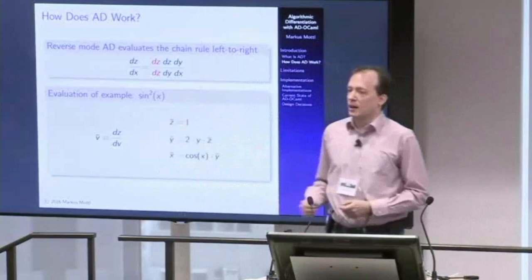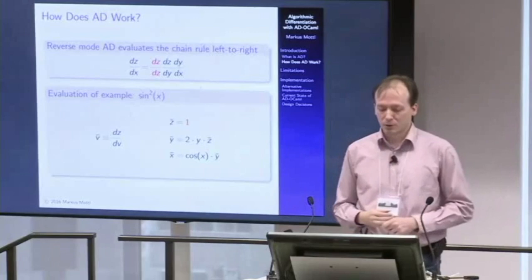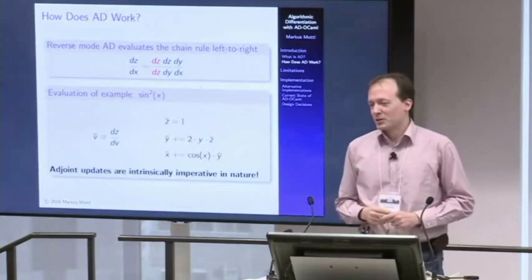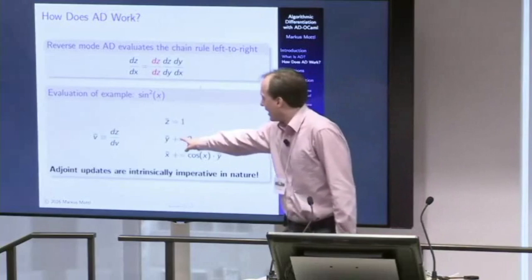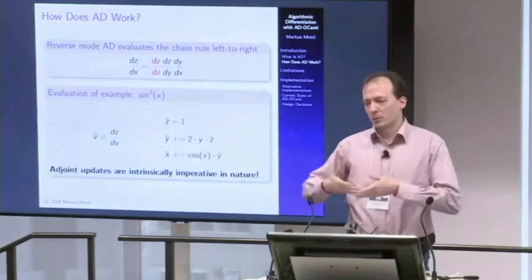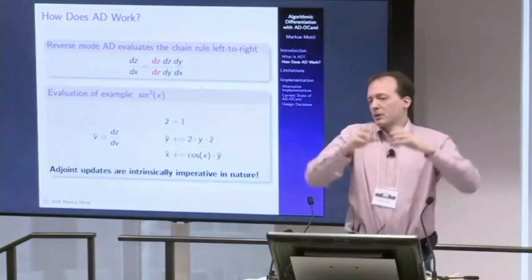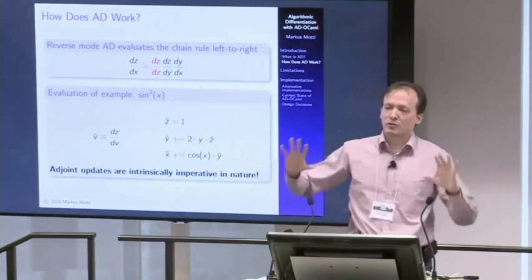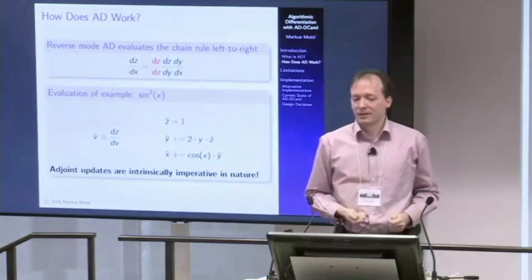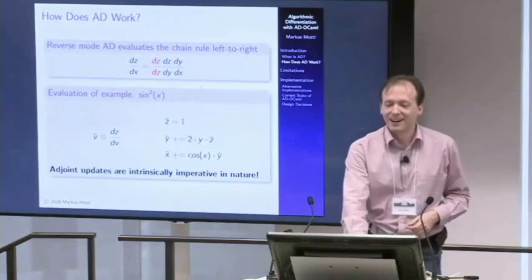There's a subtlety: in forward mode, every value is produced by exactly one operation. But going backwards, many operations may use your value — it may appear in many branches. Information from all branches must flow together into the adjoint values. That's why you have to update adjoints in an imperative way using plus-equals. This is very important: in forward mode the adjoints are set once, but in reverse mode they must be accumulated.